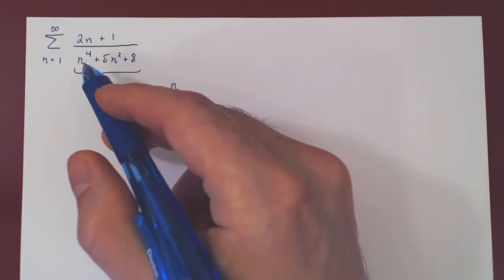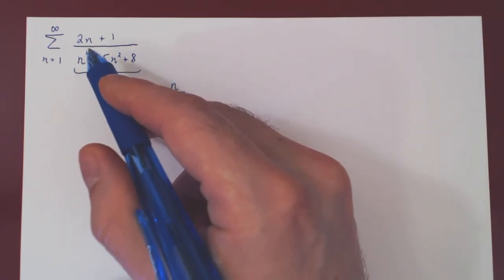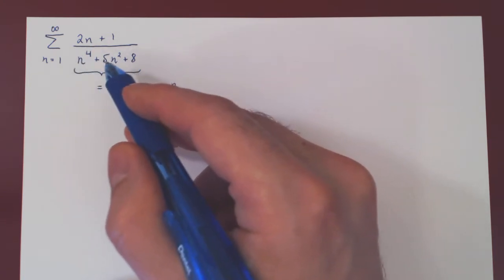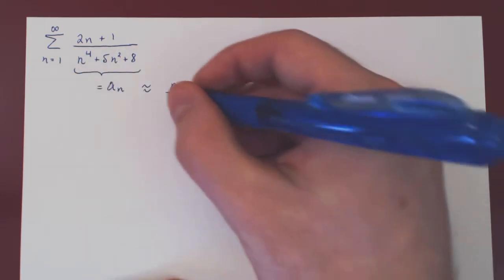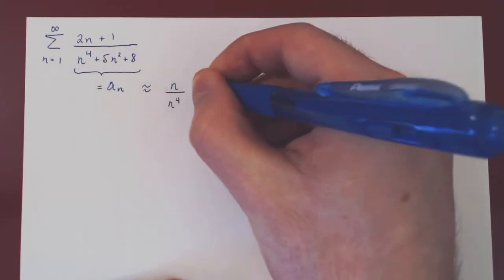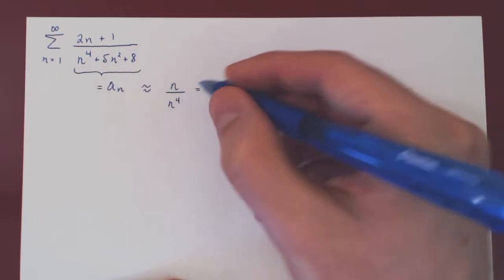Over, on our denominator, when N is large, N to the 4 is way larger than 5N squared and then 8. So our dominant term is N to the 4. Let's simplify. This is simply 1 over N cubed.